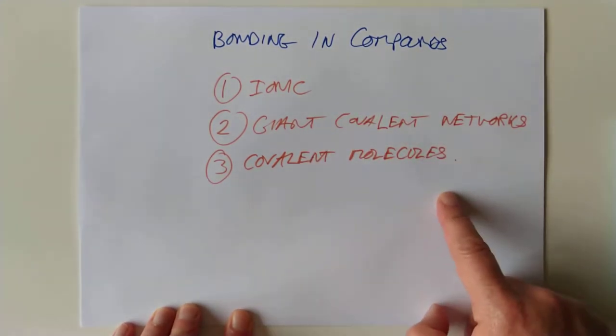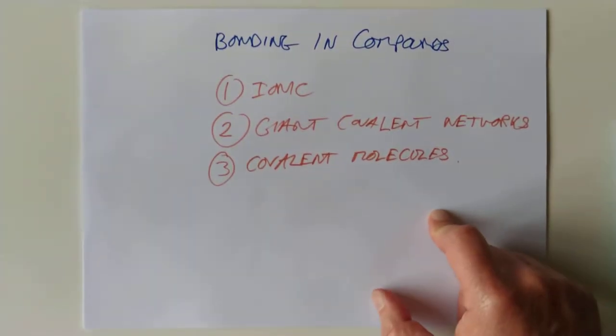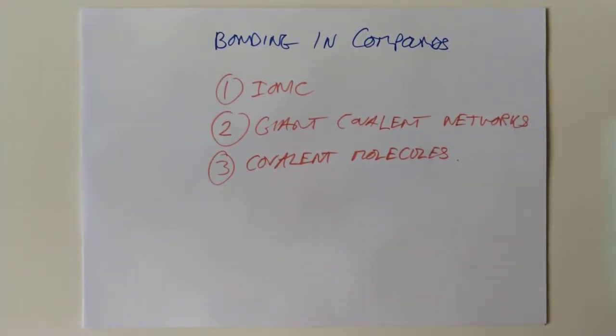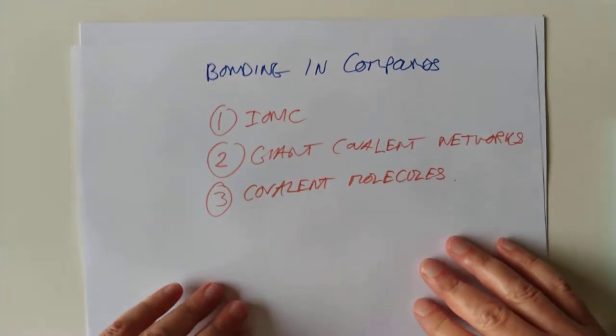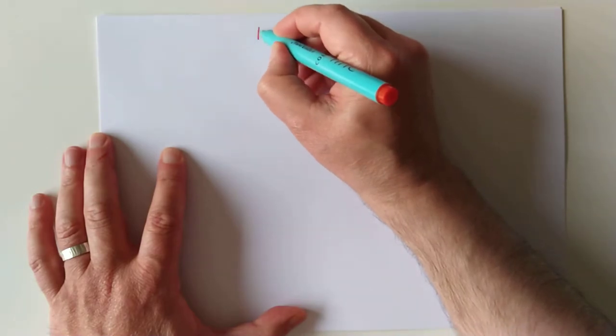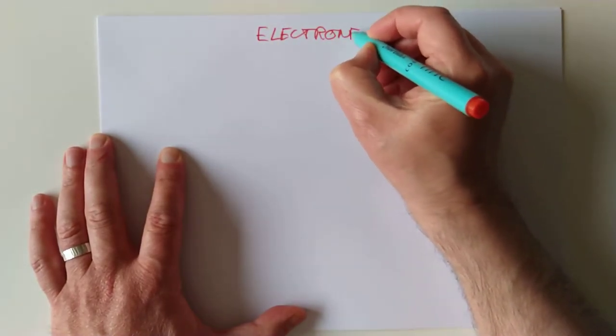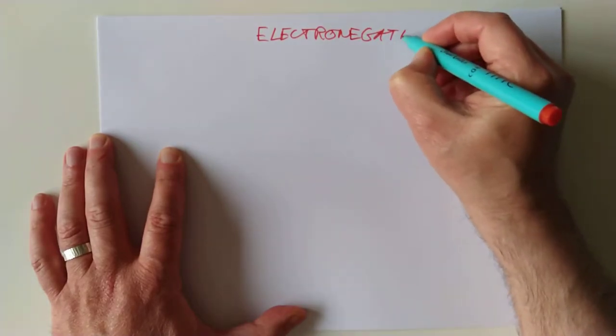So bonding in compounds so far. We have dealt with ionic, we have dealt with giant covalent networks. Shouldn't we be dealing with these? Before we deal with number three, there is an idea I need to call back on. Where we indulge in more hilarity at my expense. Do we remember this concept? Electronegativity.